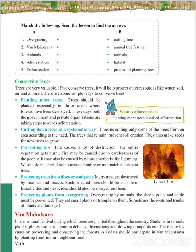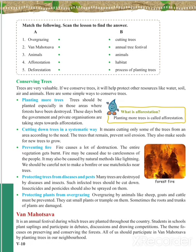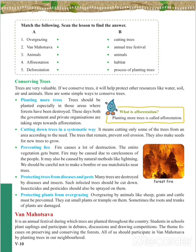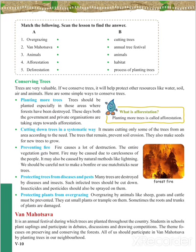Next is preventing trees from diseases and pests. Many trees are destroyed by diseases and insects. Such trees need to be cut down and replaced with new plants. Insecticides and pesticides should be given to the other trees near the affected area to protect them.